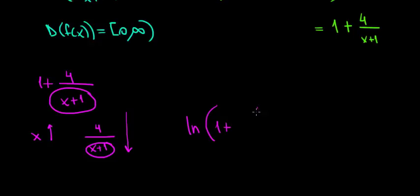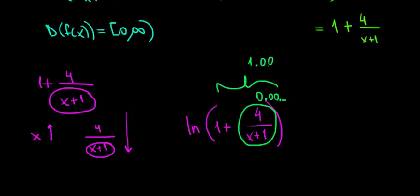We have ln of 1 plus 4 divided by x plus 1. So as x increases, 4 divided by x plus 1 becomes a very small number, becomes 0.0 something. Let's just write it 0.00 something. And then we add 1 to it and the result becomes 1.0001.